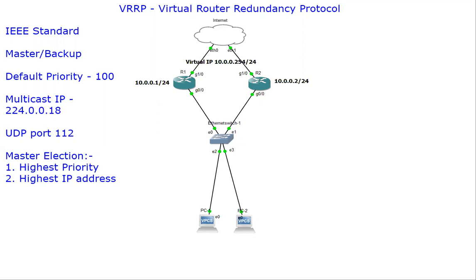One router is considered to be the master and the others are in the backup state. The default priority value is 100, and the multicast IP address used is 224.0.0.80. The UDP port used is 1112, and this port should not be blocked in the environment to ensure the protocol works.